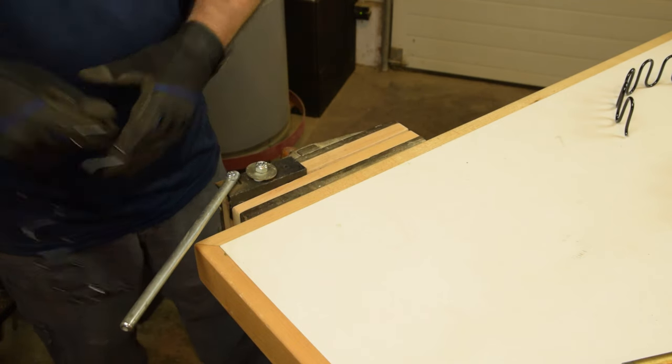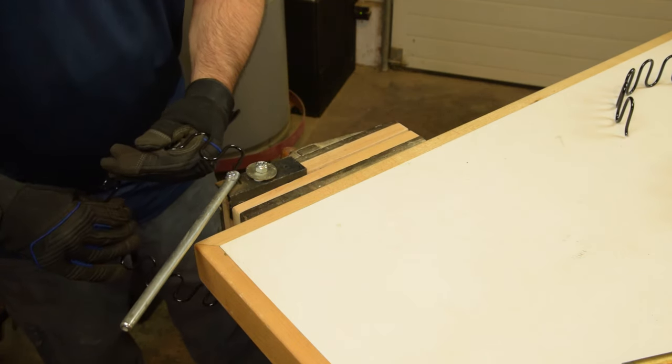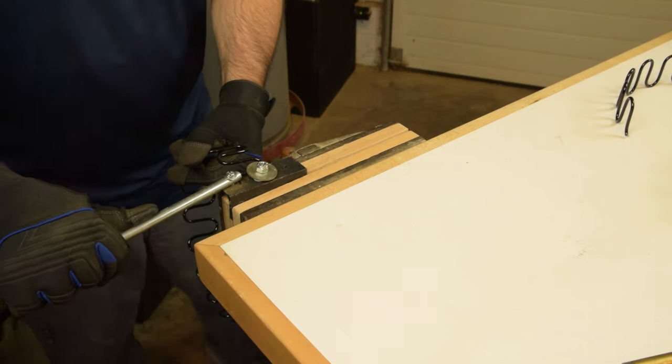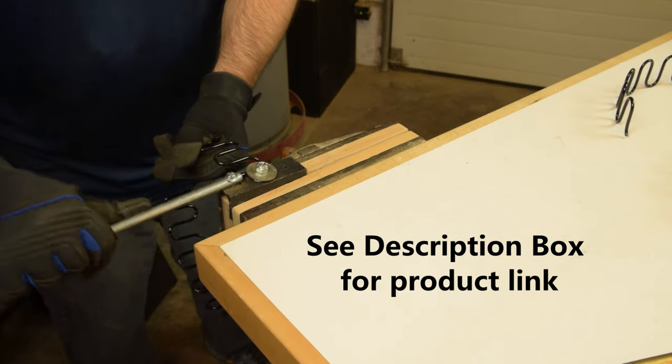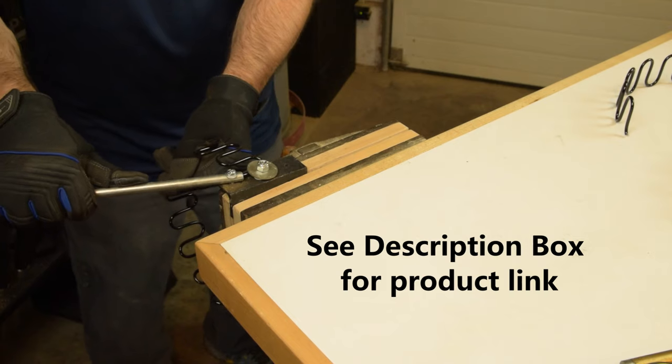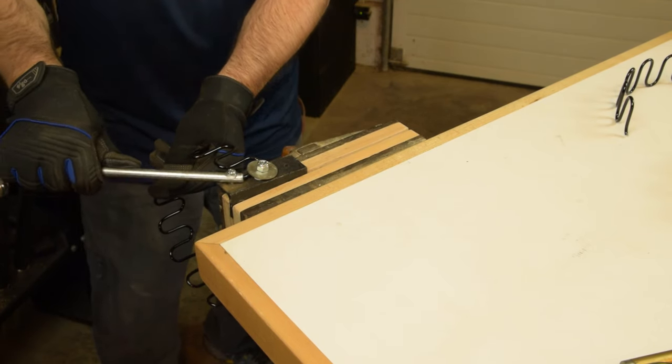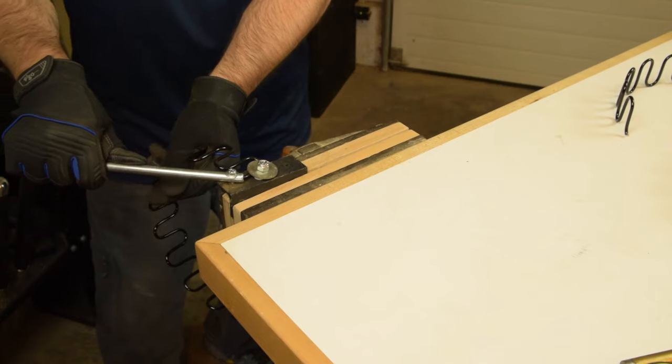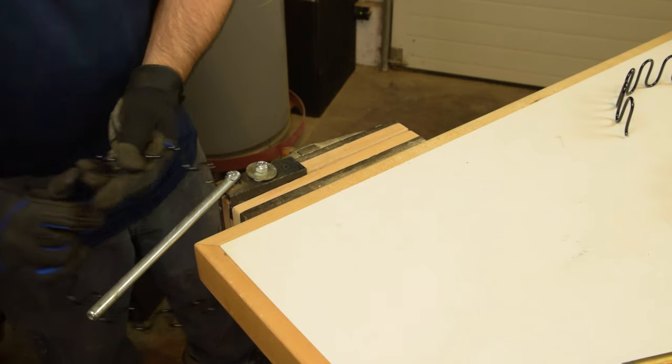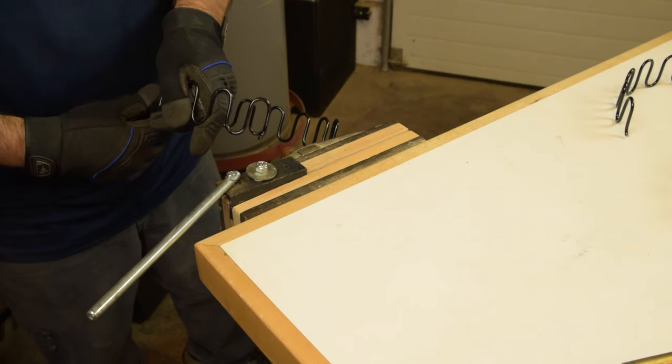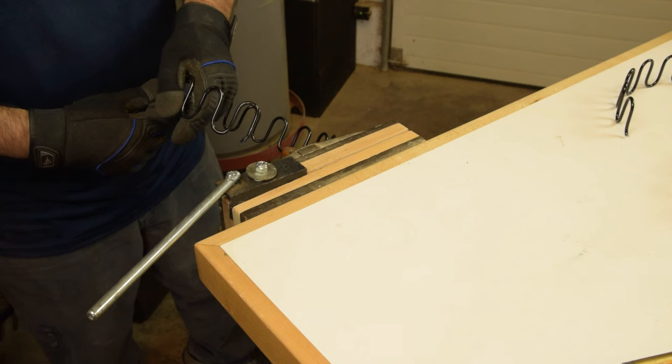To do that, I'll use my little homemade spring bender. CS Osborne makes a commercially available one if you want to go out and buy one—that's the easy route. I had some angle iron and pieces in the shop that I was able to cobble together, and it seems to work just fine. As long as you can bend that tip towards the rest of the zigzag spring, you'll be in good shape.